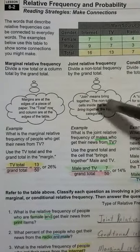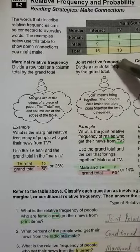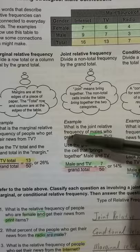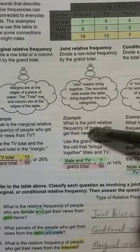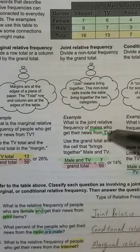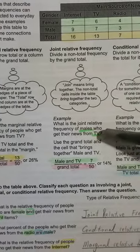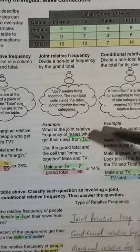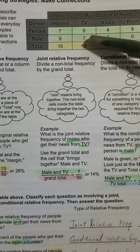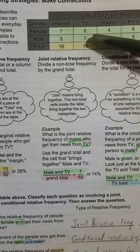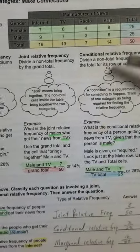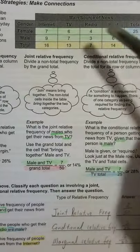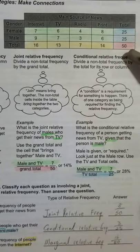The next type is joint relative frequency. Joint means to combine. In this case, the question asks: what is the joint relative frequency of males who get their news from TV? It has to be male and the source has to be TV. Looking at TV and male, you have seven, so it's seven out of the grand total of 50. That's joint relative frequency - anything in green divided by the grand total.